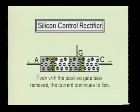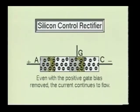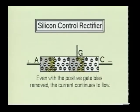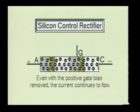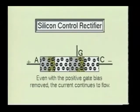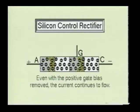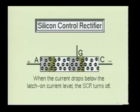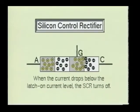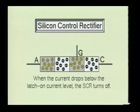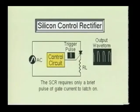Once the SCR turns on, it will remain on even if the gate signal is removed. When the SCR turns on, it reacts much like a regular forward-biased diode. The SCR will remain on as long as the current flowing through the device remains above its latch-on current level. When the current drops below this level, it turns back off. For this reason, the SCR is most commonly used in AC circuits.